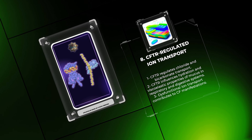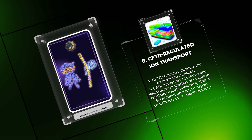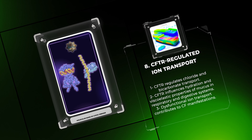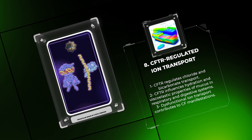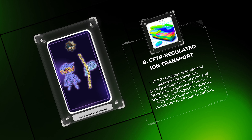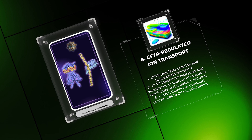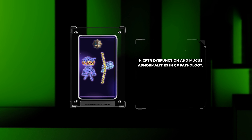Proper ion transport mediated by CFTR is crucial for maintaining homeostasis in various tissues, including the respiratory and digestive systems. CFTR regulates chloride and bicarbonate transport, which in turn influences the hydration and viscoelastic properties of mucus in the airways and gastrointestinal tract. Dysfunctional ion transport contributes to hallmark manifestations of CF, such as impaired mucociliary clearance and pancreatic insufficiency.